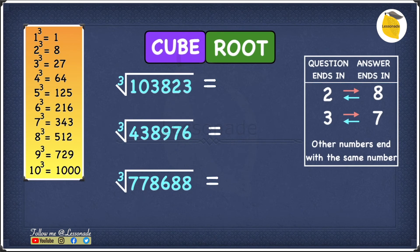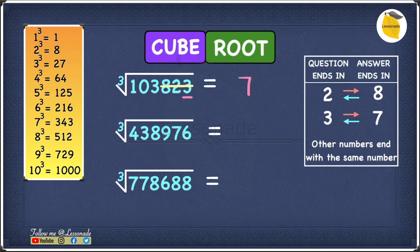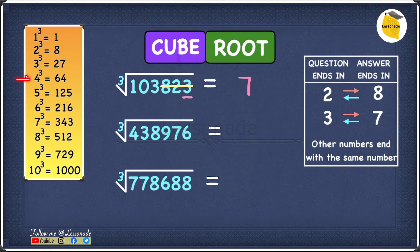In the previous examples we looked at cube roots of 4-digit and 5-digit numbers. Now let's move to 6 digits. Our first example is cube root of 103823. The last digit is 3, and if the question ends in 3, our answer will end in 7. Cross out the last three digits — 8, 2, 3 — and we're left with 103. The 103 fits between 64 and 125, between 4 cubed and 5 cubed. Since 4 cubed is smaller, our answer is 47.